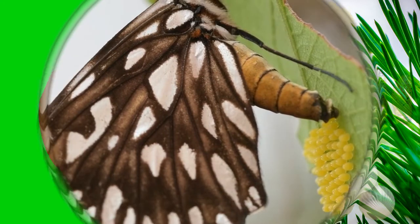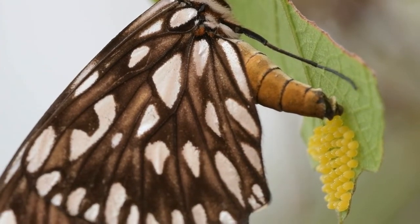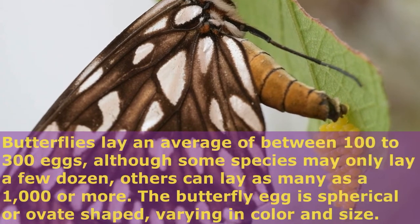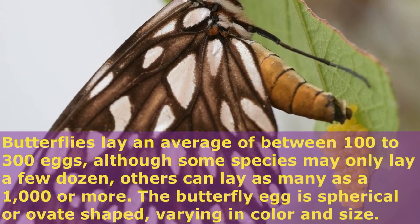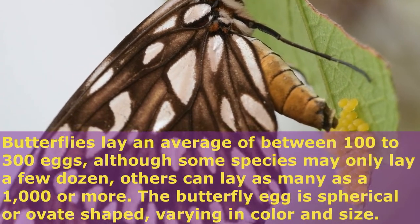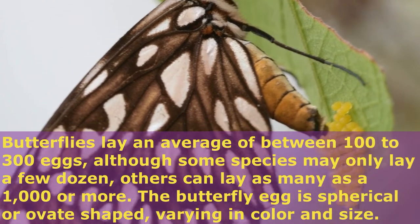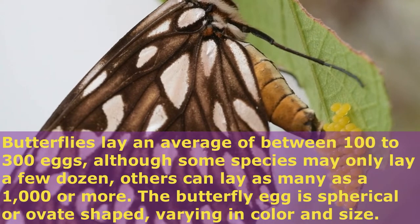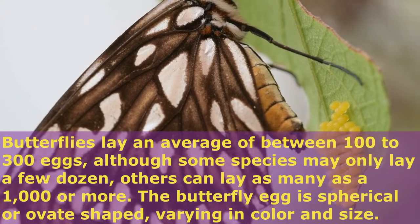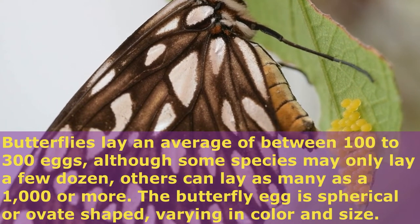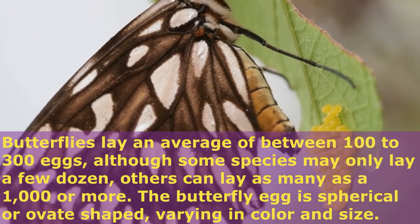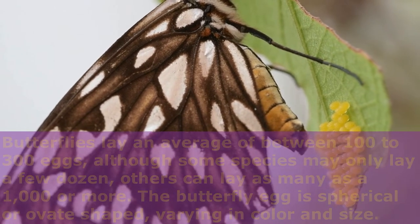It all starts with the butterfly eggs. Butterflies lay an average of between 100 to 300 eggs. Although some species may only lay a few dozen, others can lay as many as 1,000 or more. The butterfly egg is spherical or ovate shaped, varying in color and size.